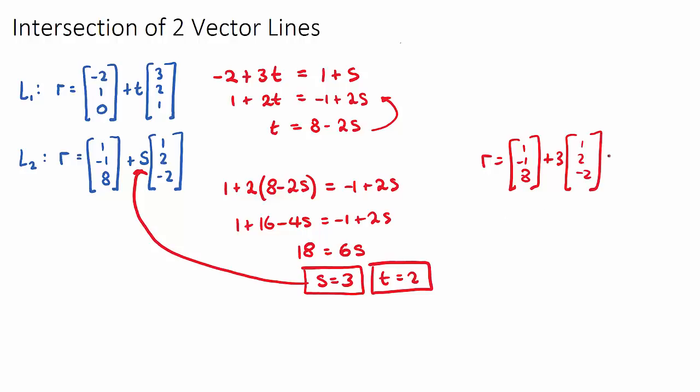I will now have a resultant answer. So 1 plus 3 times 1, that'll be 4. Negative 1 plus 3 times 2, so it'll be negative 1 plus 6, which is 5. And then 8, then we subtract 6, so it'll be 2.